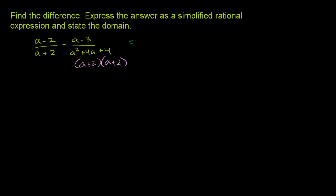This will be the same thing as the first term, a minus 2 over a plus 2, but we want the denominator now to be a plus 2 times a plus 2, or a plus 2 squared. So let's multiply both the numerator and the denominator by a plus 2.